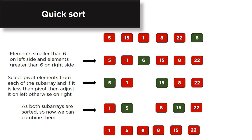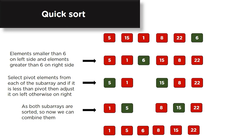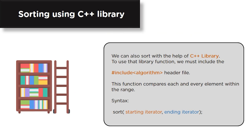We can also sort using the C++ library. To use the library sort function, we must include the algorithm header file using `#include <algorithm>`. This function compares each and every element within the range. The syntax is: `sort(starting_iterator, ending_iterator)`. The `#include` directive is a preprocessor statement.